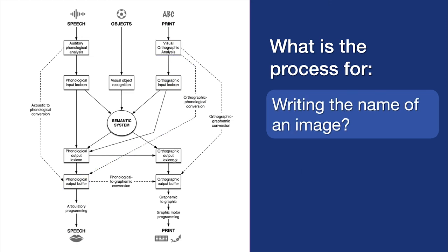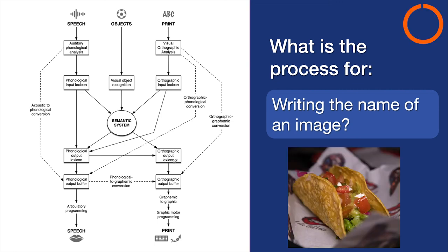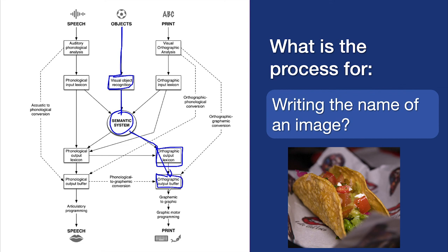What about writing the name of an image — written confrontation naming? You do that by recognizing what the object is, and that lights up the semantic system, which tells you we've got a word for this. The best word most strongly lights up — let's say 'taco' — and it has a T, an A, a C, and an O. Hold onto those letters, the letters look like this, please turn that into a motor plan, and then you write it or type it.